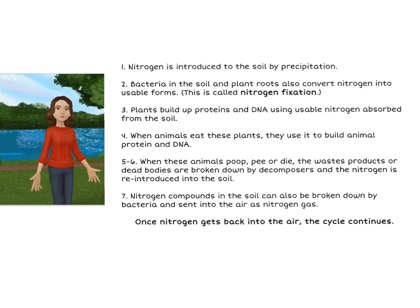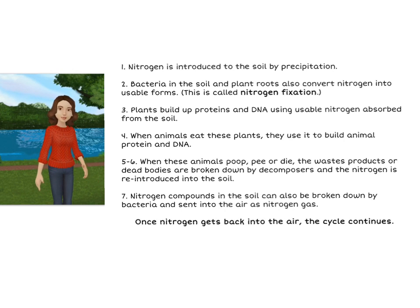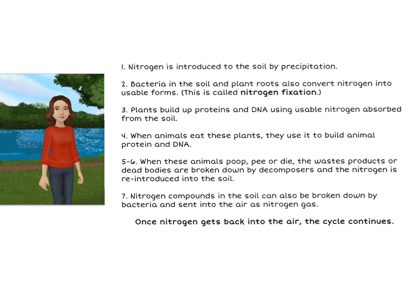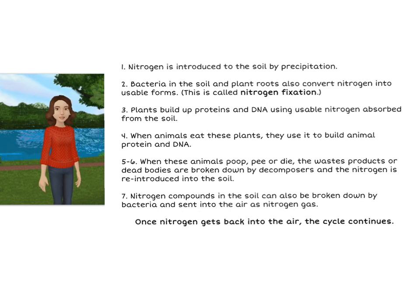Five through six, when these animals poop, pee, or die, the waste products or dead bodies are broken down by decomposers and the nitrogen is reintroduced into the soil. Seven, nitrogen compounds in the soil can also be broken down by bacteria and sent into the air as nitrogen gas.